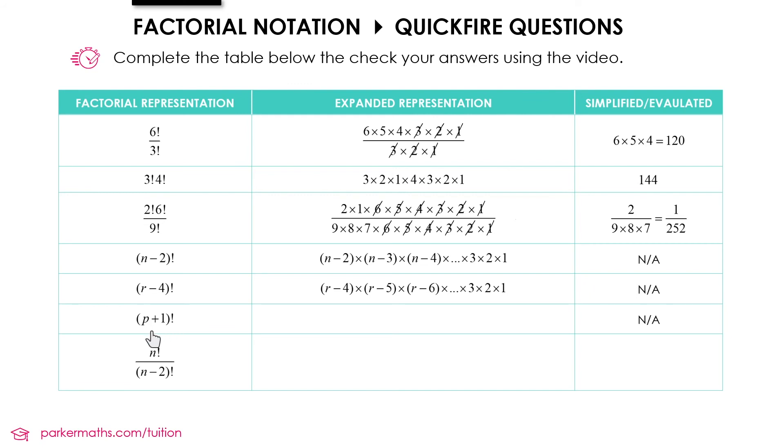In this one we've got p plus 1 factorial. So that's our start value. And then subtracting 1 gets us to p. And then subtracting 1 again p minus 1 and so on. Once again you don't have to write all five terms in this first part here. I've just done it so it's clear what I'm doing. But it does need to start at p plus 1. And it needs to be clear that you're subtracting 1 each time.